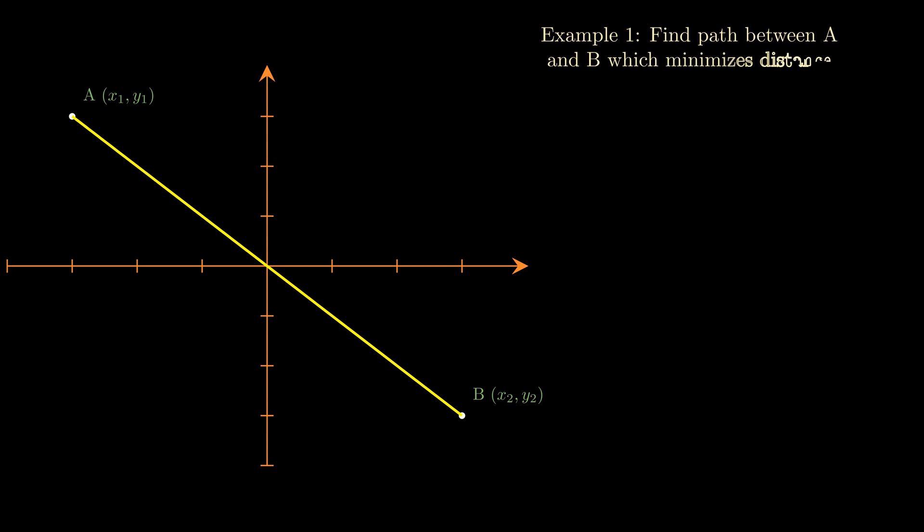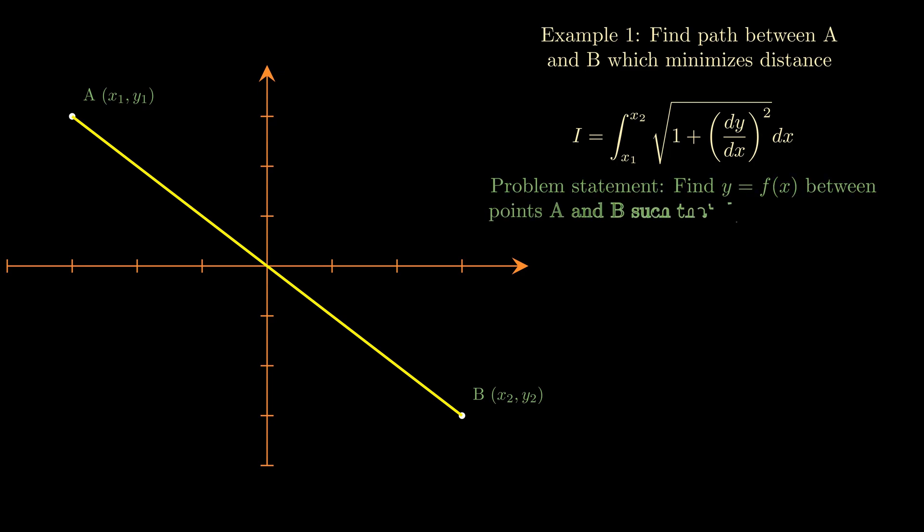If we formulate this distance minimization problem as a calculus of variations problem, we can start by writing the path length integral I as the integral along our path from points A to B of the arc length element ds. This ds is just the square root of dx squared plus dy squared by the Pythagorean theorem, where dx and dy are just infinitesimally small distances in the x and y directions. If we take out the dx from the square root we get this integral with respect to x. Now since we want to find the path of minimum distance between A and B, that's essentially equivalent to finding the function y = f(x) between A and B which minimizes the integral I.